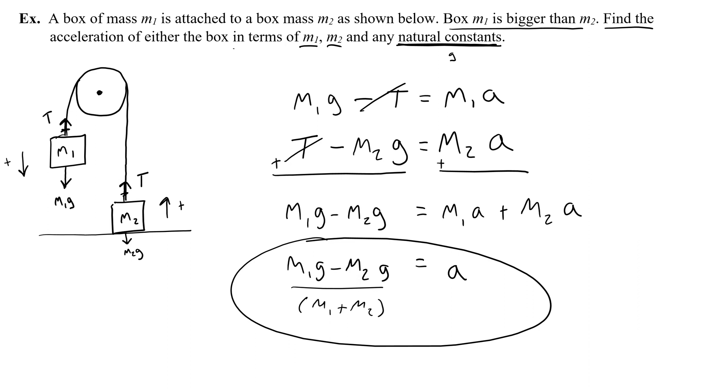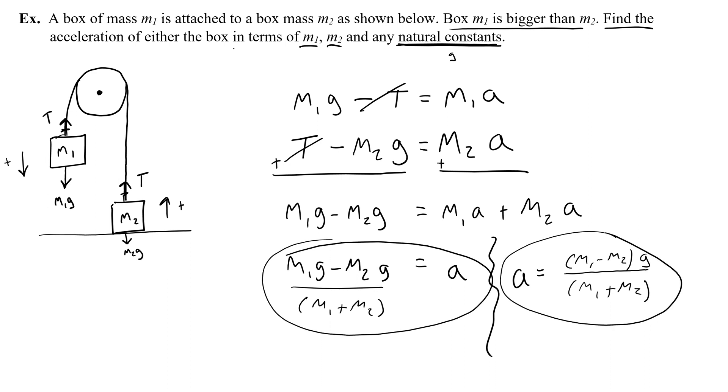You could do one further simplification if you wanted. So you could do one more simplification, which is factoring m1 minus m2 out times G. But you actually don't have to do that to get full credit. So this would give you full credit for the question, and so would this further simplified answer.